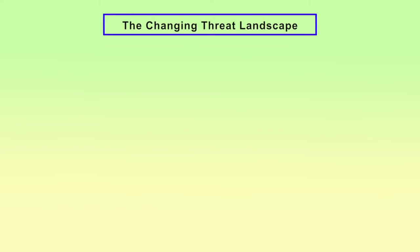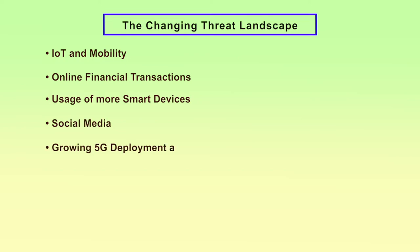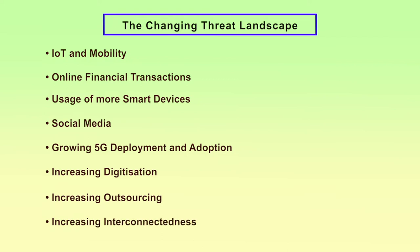Apart from the normal things, because so many new areas of IT functioning are being introduced, the threat landscape is exponentially changing. One of the changing threat landscape drivers is IoT and mobility, along with online financial transactions, usage of more smart devices, social media, growing 5G deployment and adoption, increasing digitization, increasing outsourcing, and increasing interconnectedness. These are newly upcoming areas that are tremendously useful but also give scope for increasing the threat landscape.